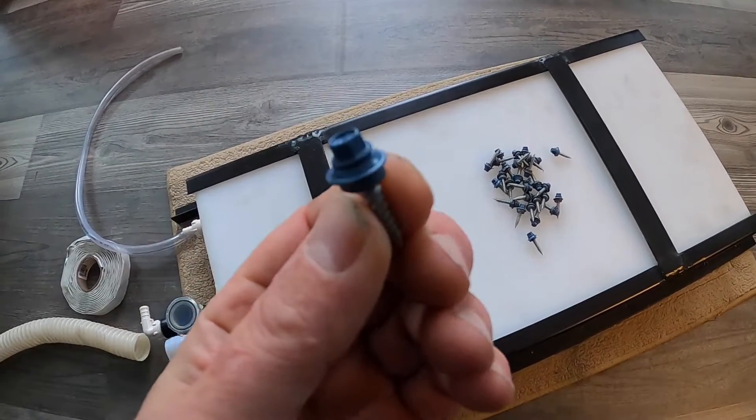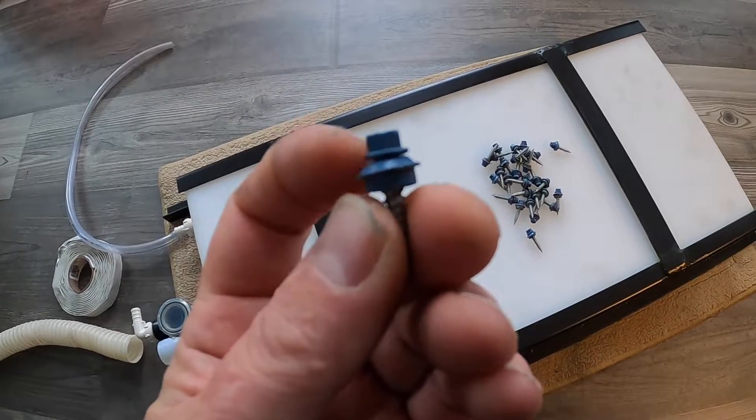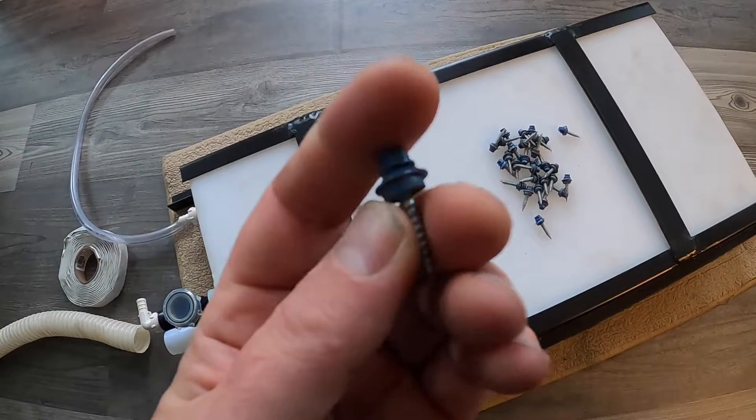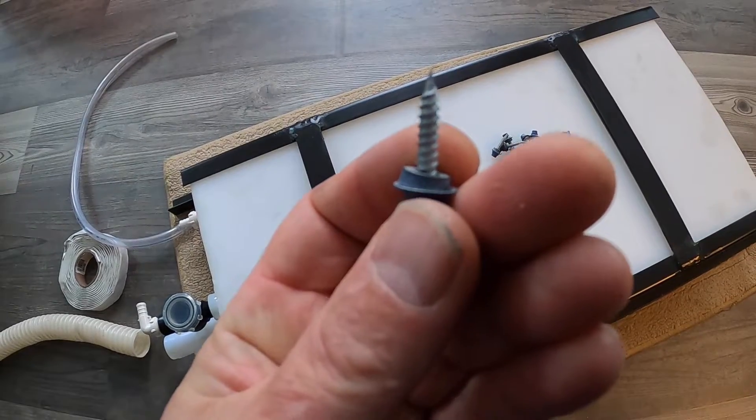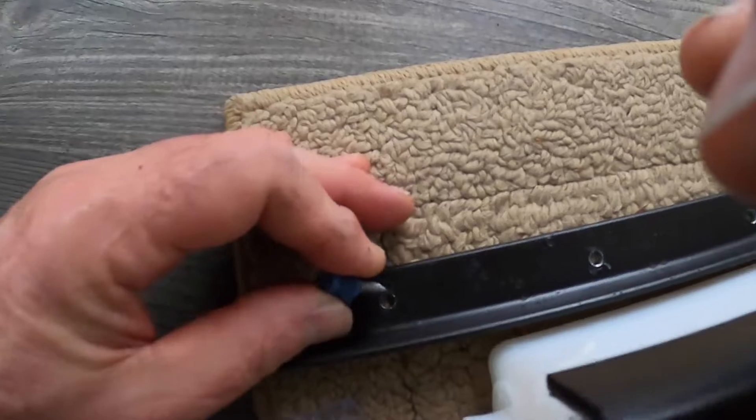These are sheet metal tin roof screws. Some of you will recognize this - got a little steel washer on it and a rubber gasket underneath. So when this goes in that hole, it will seal behind it.